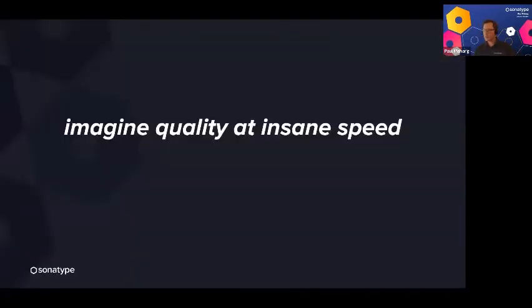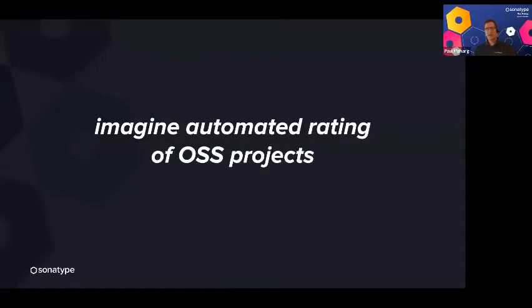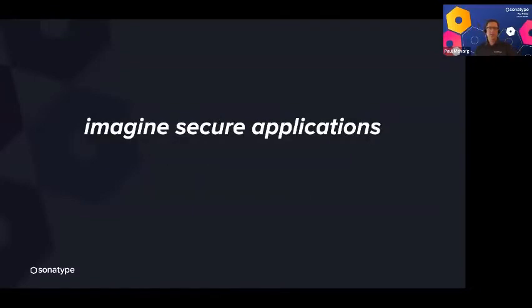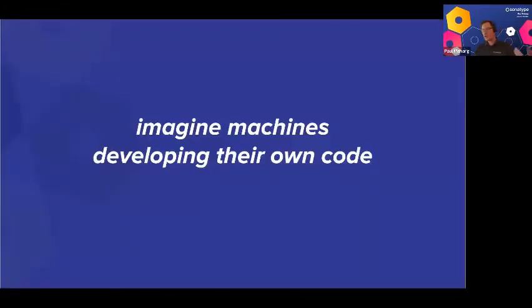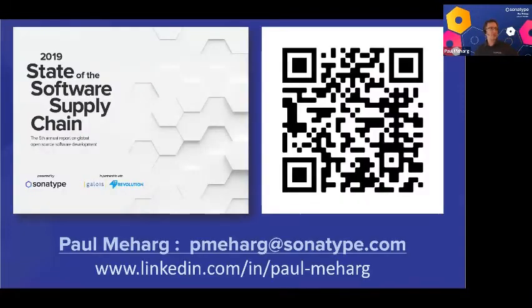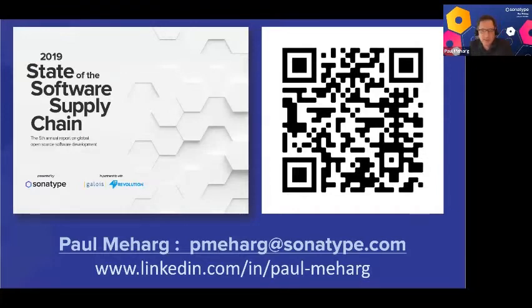Imagine quality at an insane speed. Imagine automated rating of OSS components so you can choose a two-star versus a five-star component. Imagine secure applications, maybe even machines writing their own code and picking out the best components. I'll stop there — here's a link to our Software Supply Chain Report, and my contact info is available if you want to continue the discussion.